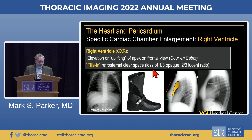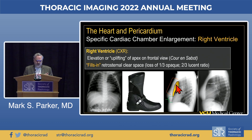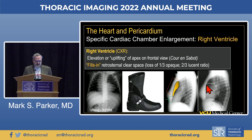On the frontal examination with RV enlargement, we'll see uplifting of the apex, and the myocardium assumes a boot-shaped heart or coeur en sabot—classically seen with tetralogy of Fallot. On the lateral examination, we lose the normal one-third opaque, two-thirds lucent relationship behind the sternum as the RV enlarges and encroaches upon the retrosternal clear space, as seen in this patient with cor pulmonale.